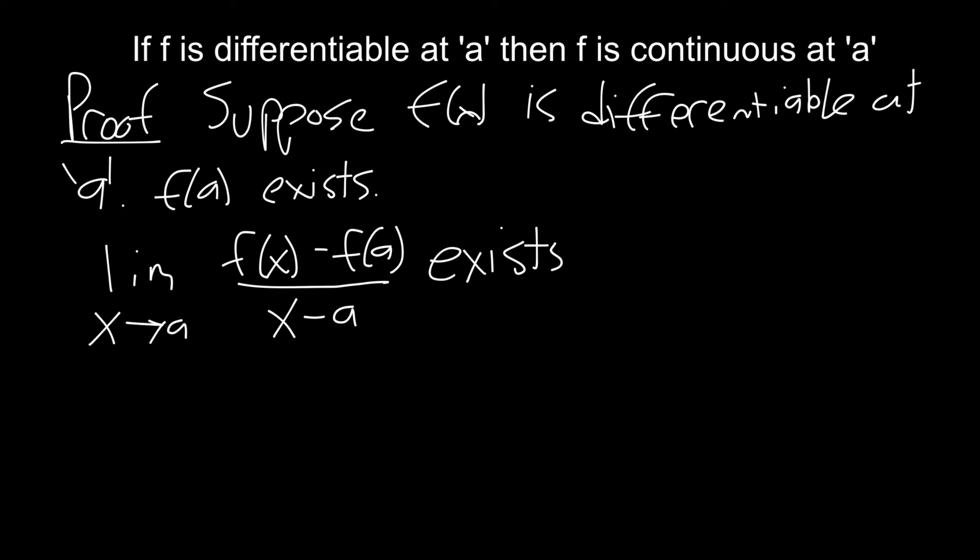Now we also know that the limit as x goes to a of f of a will simply equal f of a because the limit of a constant will be the constant. And the limit as x goes to a of x minus a will be a minus a which equals zero. So we have three limits that we know here. We need to combine these in some way to show that f is continuous.